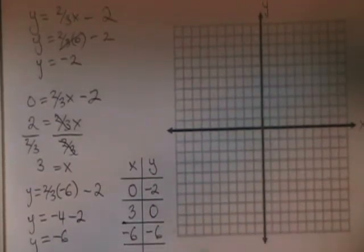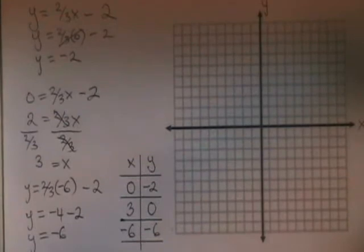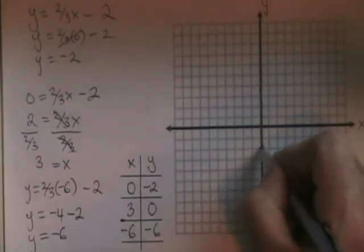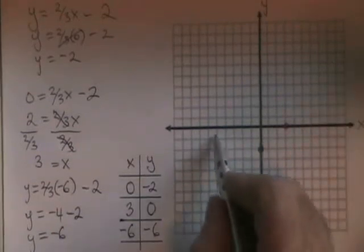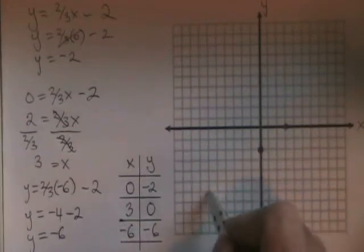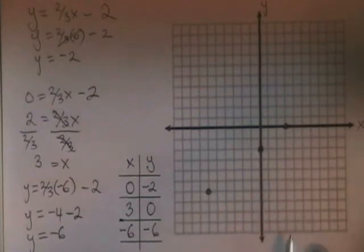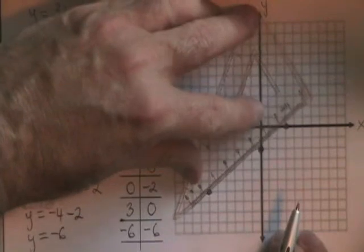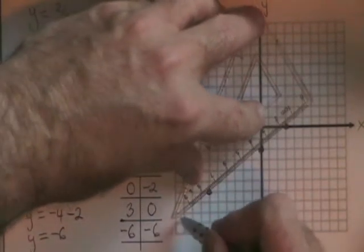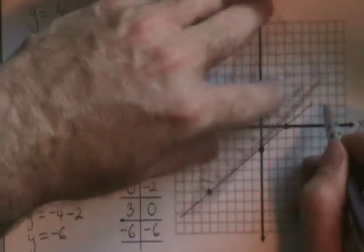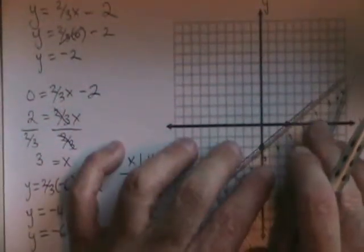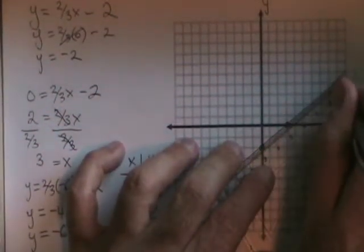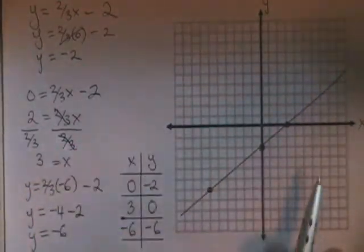Now it's time to put these points on our coordinate plane. Zero, negative two is here. Three, zero is here. And negative six, negative six is here. These points do indeed form a straight line, so what's left to do is draw a line through them, making the line go all the way through the graph, and to label the points.